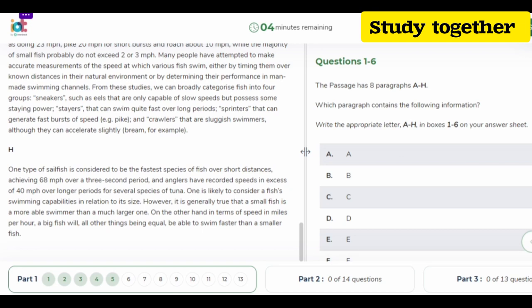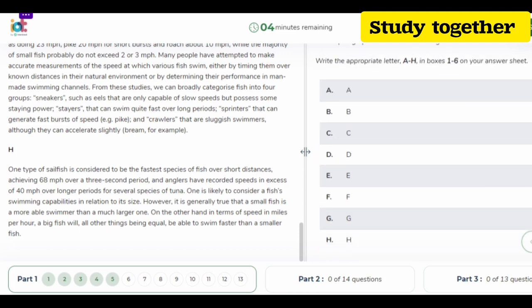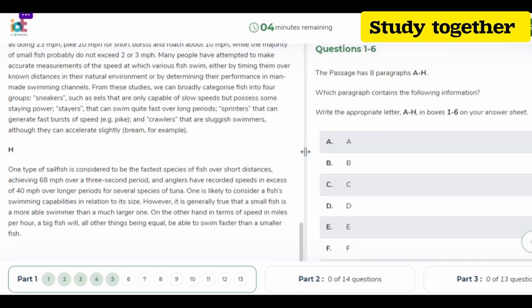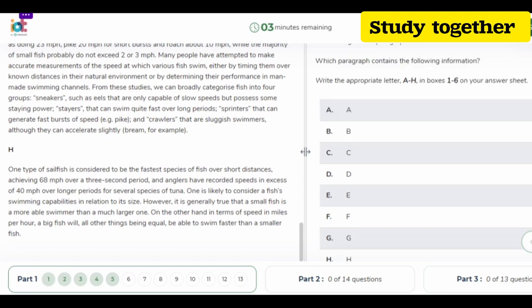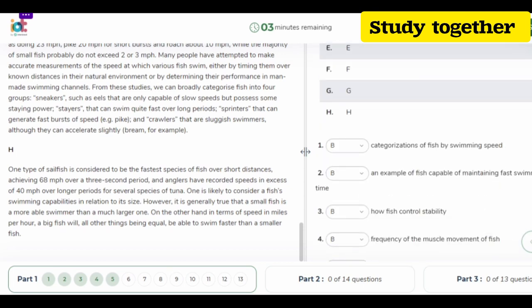One is likely to consider a fish's swimming capabilities in relation to its size. However, it is generally true that a small fish is a more able swimmer than a much larger one. On the other hand, in terms of speed in miles per hour, a big fish will, all other things being equal, be able to swim faster than a smaller fish.